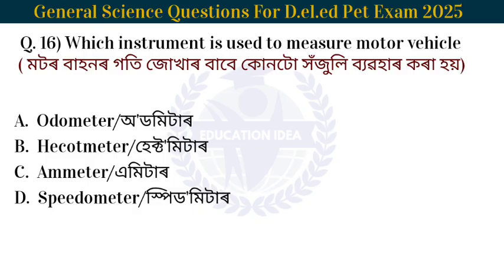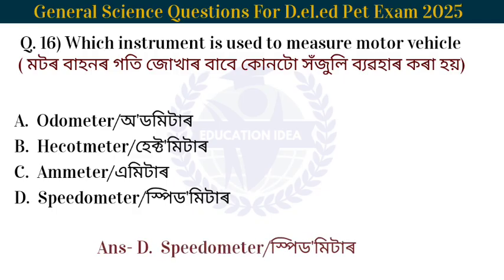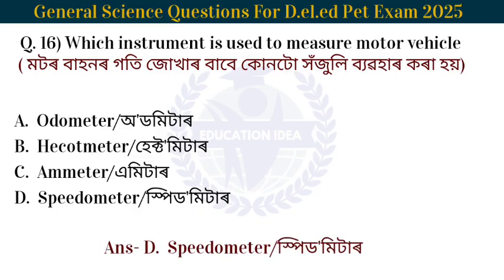Next question: Which instrument is used to measure the speed of a motor vehicle? The instrument used to measure motor vehicle speed is a speedometer.